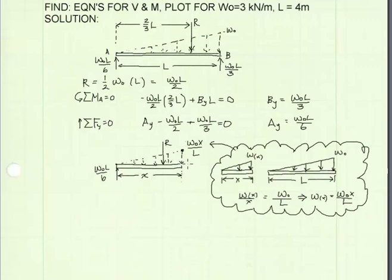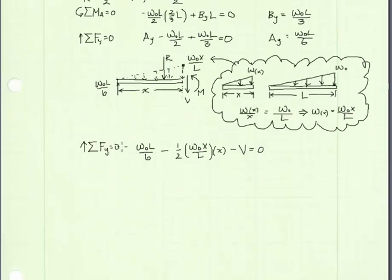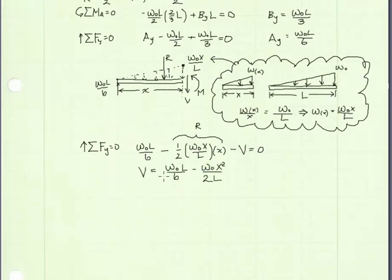The next step is to draw the shear and moment arrows using the positive sign convention, then solve for shear and moment using static equilibrium. Summing forces in the Y direction equal to zero: the reaction at A minus the resultant force from the triangular distributed load — which is one-half times the base x times the height W naught x over L — minus shear equals zero. Solving for shear gives: V equals W naught L over 6 minus W naught x squared over 2L.